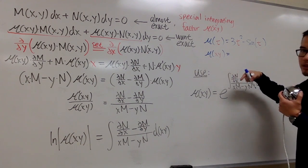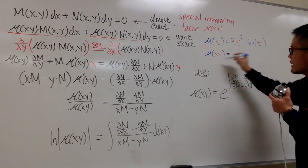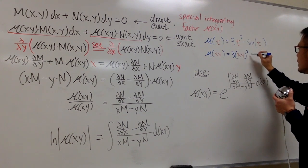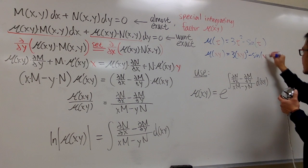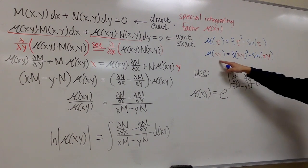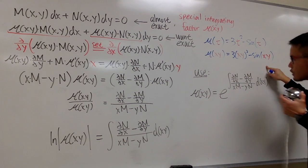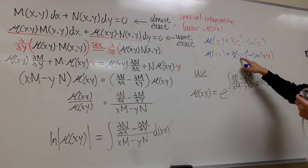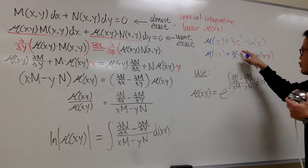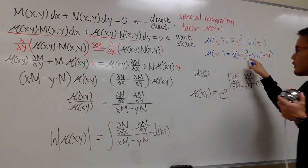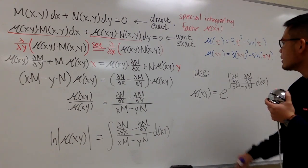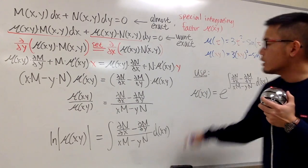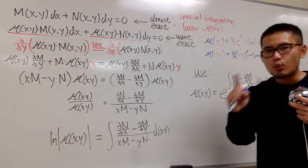The corresponding function mu of xy would be 3 times (xy) squared minus sine of xy — a function in terms of the product of x times y. Note that (xy) squared is technically x squared y squared after distributing the power. Keep in mind: x to the first power times y to the first power must be together as one input.